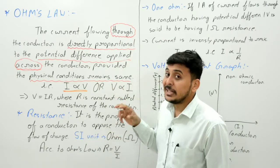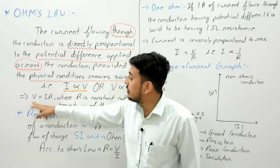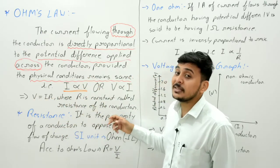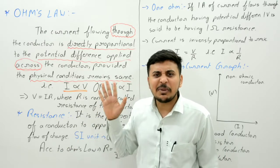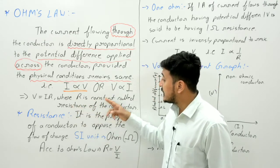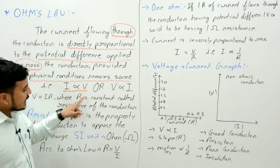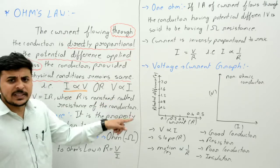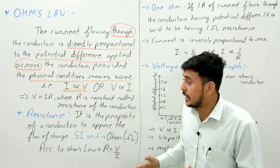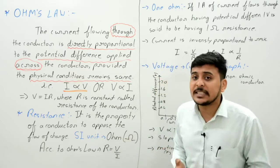Since there is a proportionality, we need a constant to remove it. So instead of V is proportional to I, we write V = IR, where R is a constant. R is also known as the resistance of the conductor. So R is constant and called resistance of the conductor.